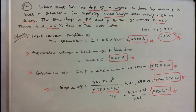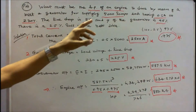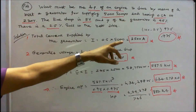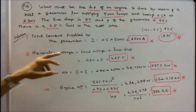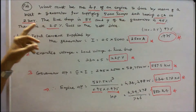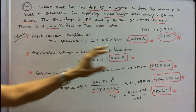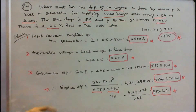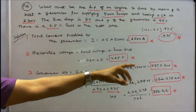Step 1: Total current supplied by the generator is equal to number of lamps into current taken by each lamp: 0.5 into 5000, that is equal to 2500 amps. Generator voltage is equal to load voltage plus line drop: 230 plus 5, that is equal to 235 volts. Generator output is equal to voltage into current: 235 into 2500, that is equal to 587.5 kilowatts.